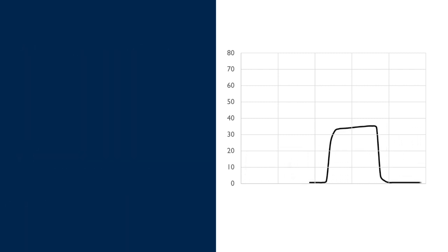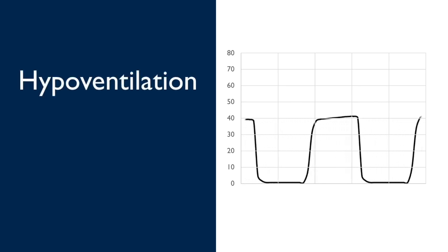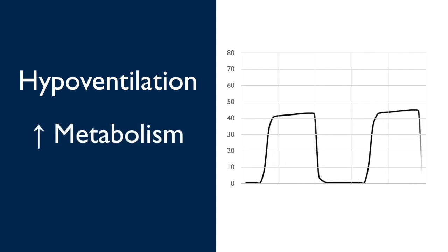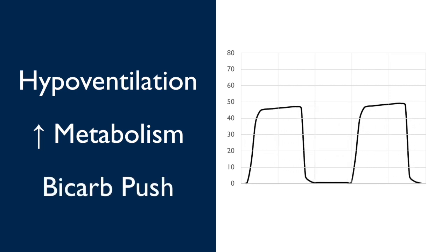Our next example is basically the complete opposite. You'll notice a gradually increasing end-tidal CO2. This can be caused by anything that increases the arterial CO2, such as hypoventilation, or an increase in metabolism, such as hyperthermia. You'll also notice that the end-tidal will go up any time that you give your patient exogenous bicarbonate, such as a bicarb push.